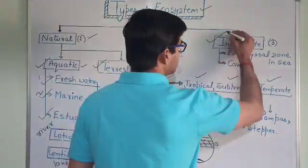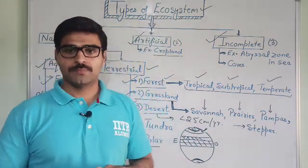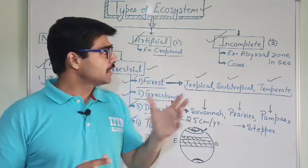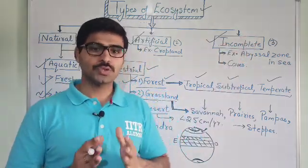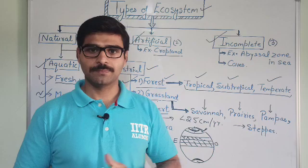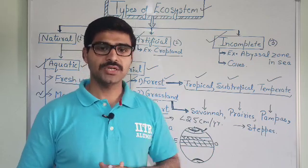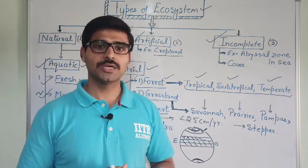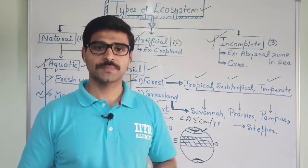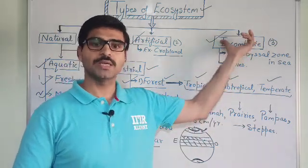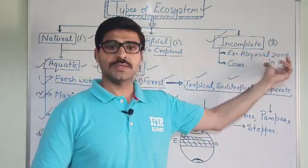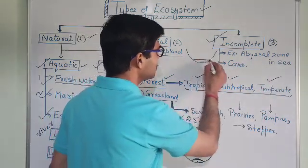The third broad category is the incomplete ecosystem. An incomplete ecosystem is one in which any one or two of the four basic components — abiotic conditions, producers, consumers, and decomposers — are missing. Two examples are: the abyssal zone in the sea, which is the deepest and darkest part where producers are absent; and caves, where producers are also absent but some animals reside. These are known as incomplete ecosystems.